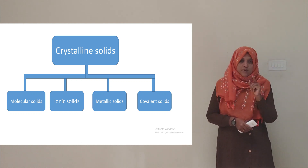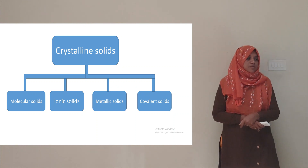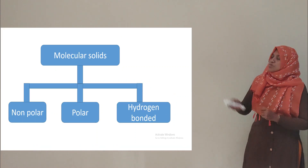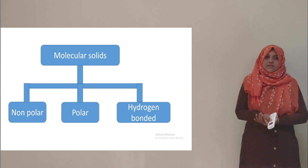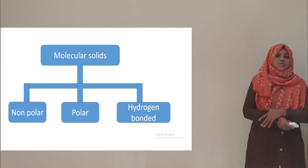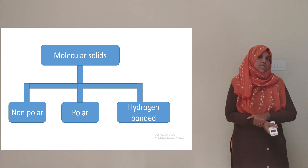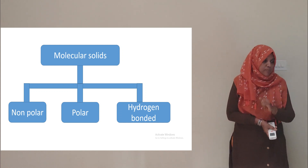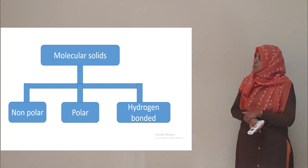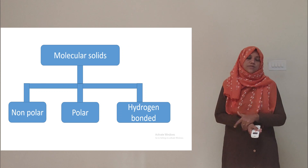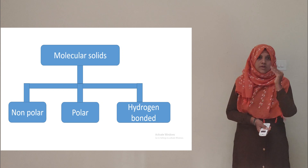We will study the first type of crystalline solid: molecular solid. Molecular solid can be classified into three types. They are non-polar, polar, and hydrogen bonded.